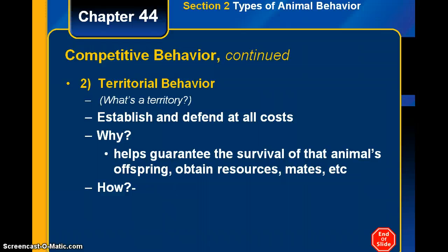Why would they do that? Establishing a territory helps guarantee the survival of the animal's offspring. It protects the resources inside that territory and their mates. Animals might mark their territory by scratches, feces, or other means — these are all different territorial behaviors that we see.